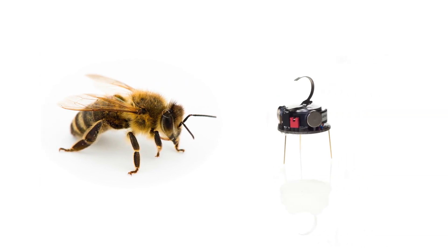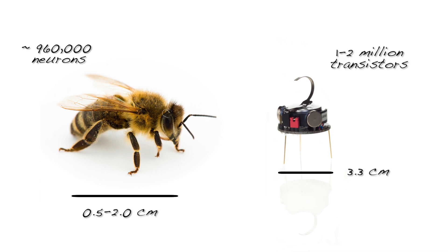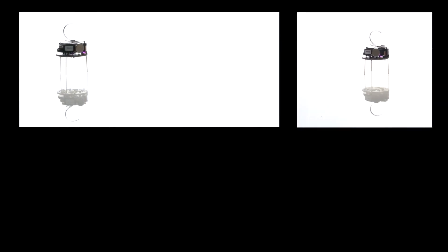In our artificial swarms, collective decisions are also the result of self-organized interactions between individuals. The Kilobot is a small and cheap robot with very limited capabilities. It can move in a straight line or rotate in place around its center.